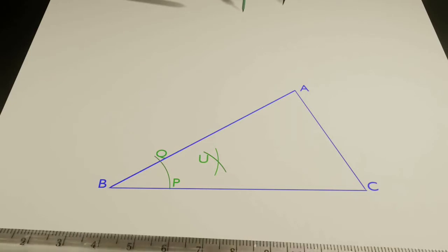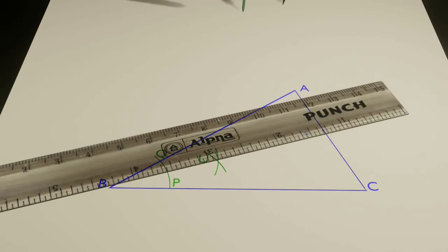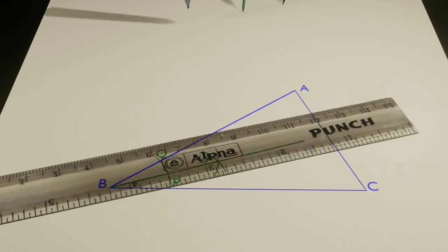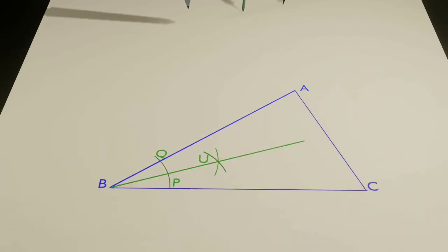Then using a ruler and a pencil, draw a line segment to connect these two points and extend it. Thus we get the bisector of the angle ABC.